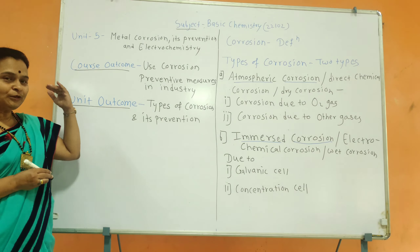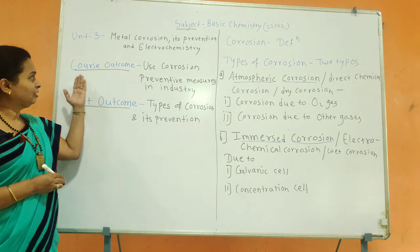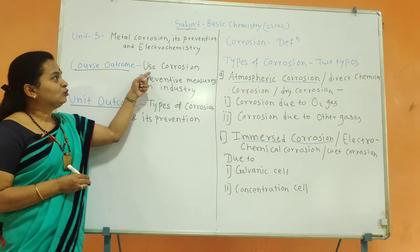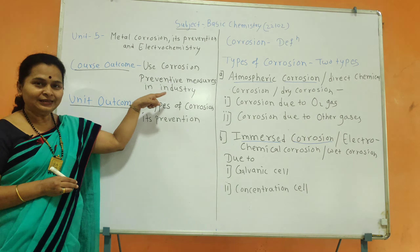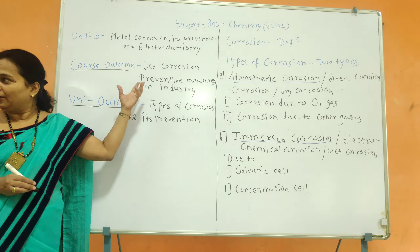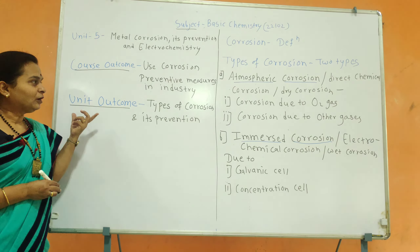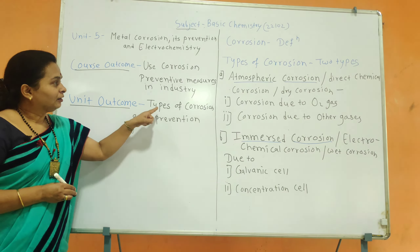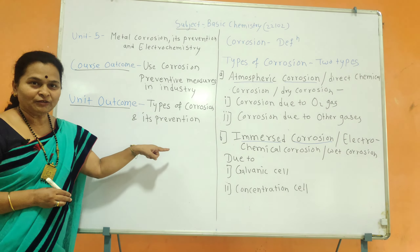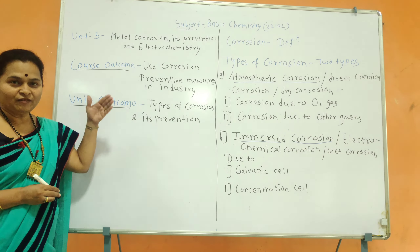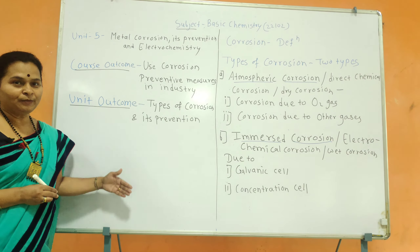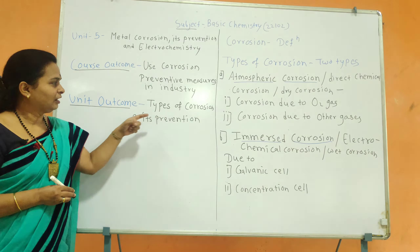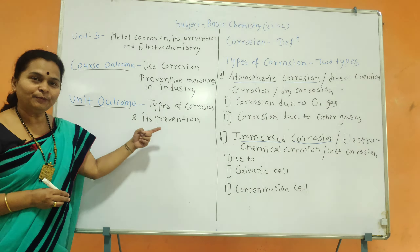In this chapter, we are going to learn the course outcome: use corrosion preventive measures in industry. The unit outcome is types of corrosion and its prevention. In this video, we will learn how to prevent corrosion.